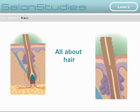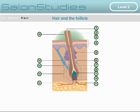This presentation is one of a series by Salon Studies at Hairdressing and Barbering at Level 2. It's a general presentation all about hair, covering aspects such as hair growth and the stages of hair growth, the hair follicle and its different parts, hair damage and the causes of hair damage, and different types of hair.